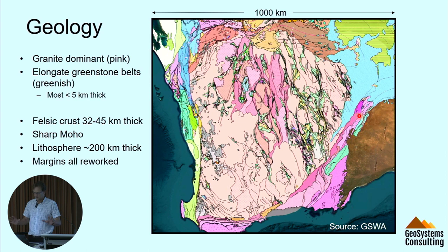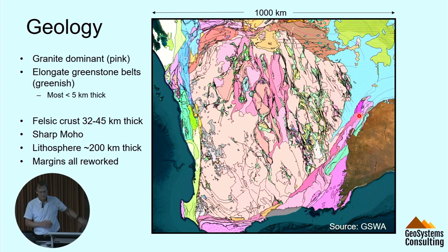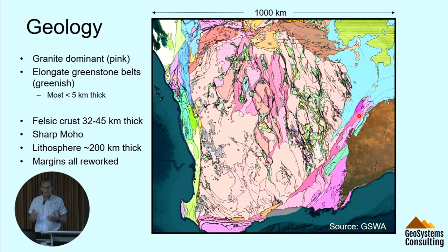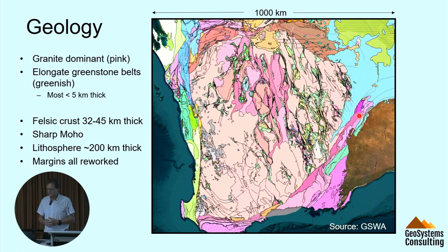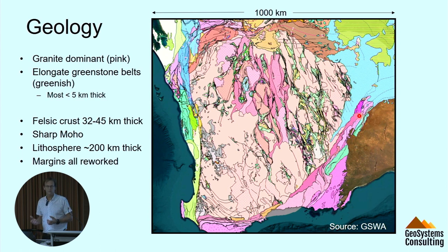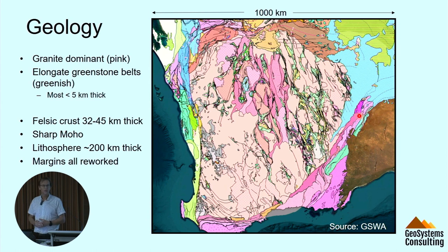In terms of the geology — here's a big scene-setter. It's granite dominated: about 70% of the area is granite, all the pink rocks we see there. We've got these elongate greenstone belts made up of volcanic rocks, generally five kilometres thick or less — they don't go down too deep. We're looking at a felsic crust, largely granitic crust, about 32 to around 45 kilometres, thickening to the east. We see a sharp Moho. And then the lithospheric mantle underneath that is around 200 kilometres thick, maybe 220.